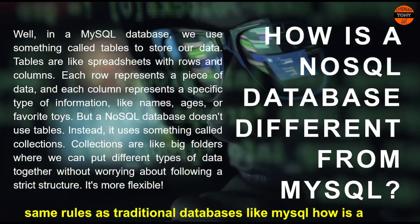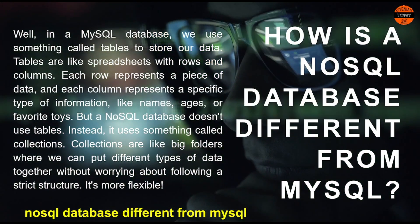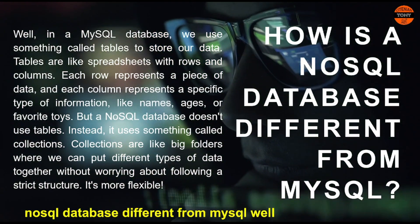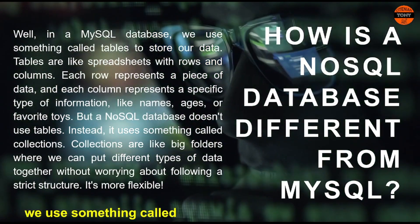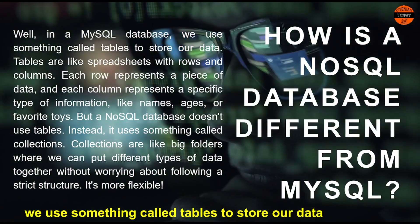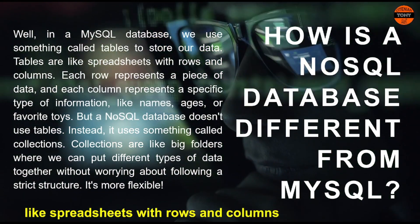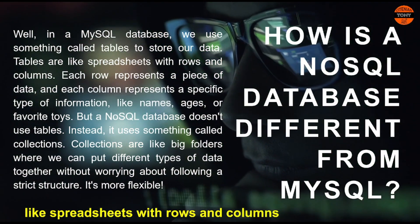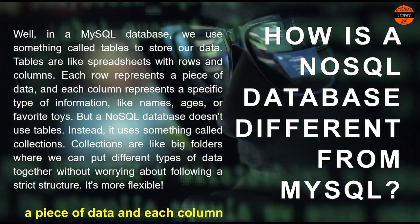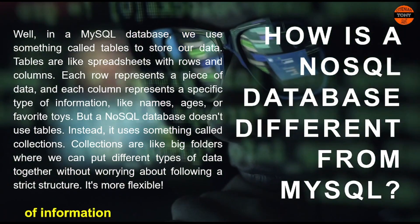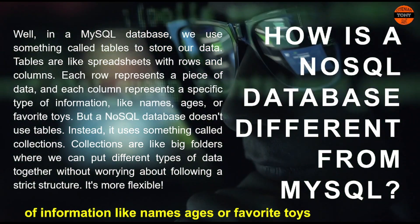How is a NoSQL Database different from MySQL? In a MySQL Database, we use something called Tables to store our data. Tables are like spreadsheets with rows and columns. Each row represents a piece of data, and each column represents a specific type of information, like names, ages, or favorite toys.